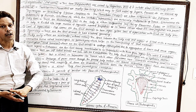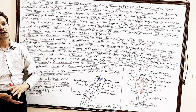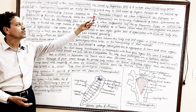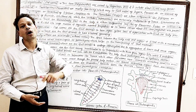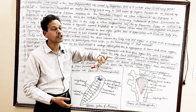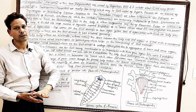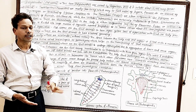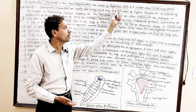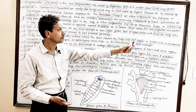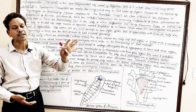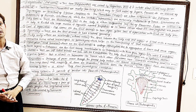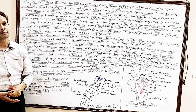Platyhelminthes includes plate-like and leaf-like flatworms. This term 'Platyhelminthes' was coined by Gegenbaur in 1859. This phylum includes about 13,000 living species.